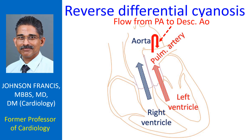Uniform central cyanosis is cyanosis of both upper and lower limbs along with cyanosis of lips and tongue. In differential cyanosis, there is cyanosis of lower limbs without cyanosis of upper limbs. This occurs typically in patent ductus arteriosus with reversal of shunt due to severe pulmonary hypertension.